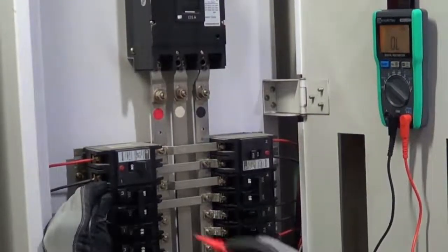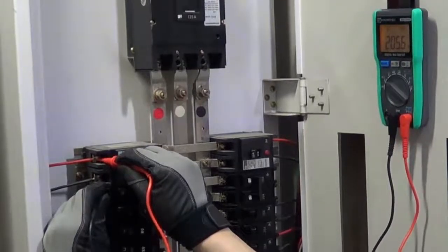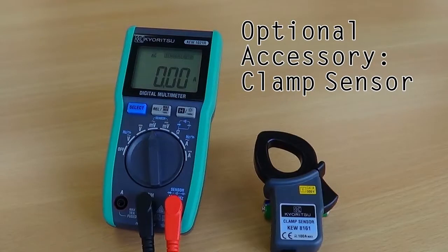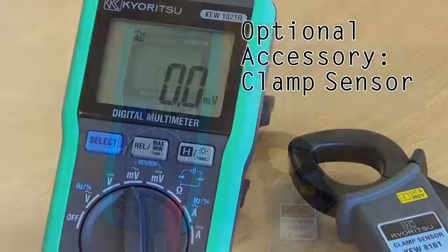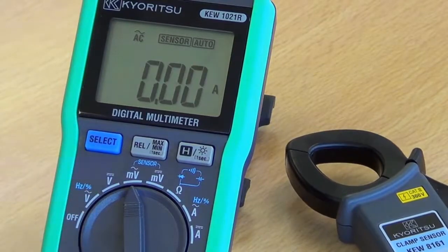This allows the meter to be fixed to a metal cabinet or switchboard, enabling hands-free operation for the user. The 1021R can also accept external inputs from optional Kyoritsu AC or AC-DC clamps, providing a direct reading from these devices when the sensor setting is selected.